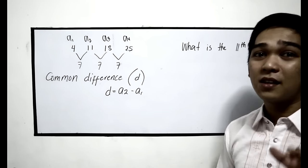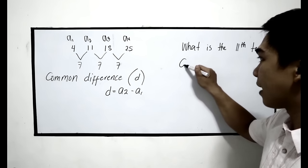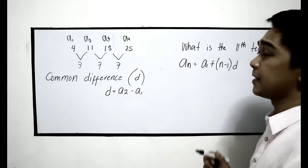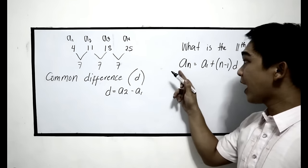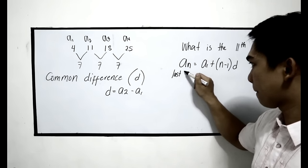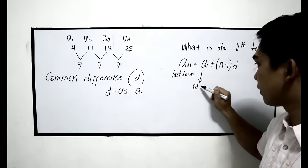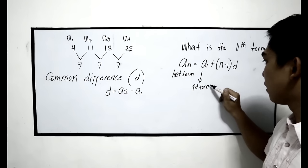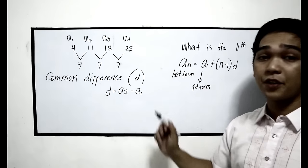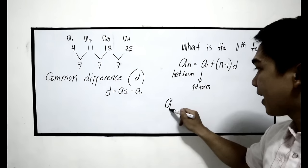Now I will introduce to you the first formula in this sequence. We have the an formula. An is equal to a1 plus n minus 1 times d. Wherein an denotes the last term, a1 is the first term, n is the term number, and d is the common difference. In this case, we are going to find the eleventh term, so that is a11.